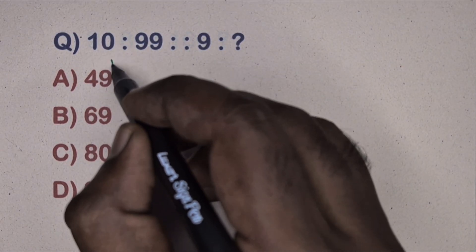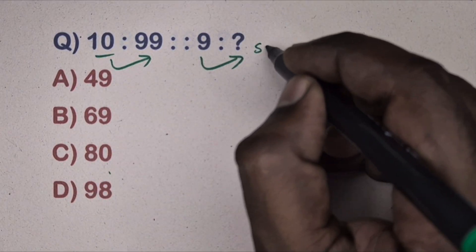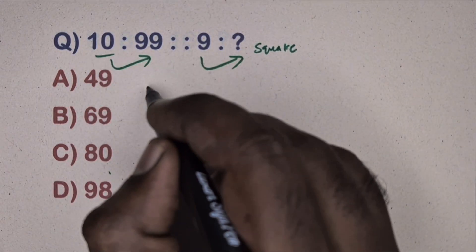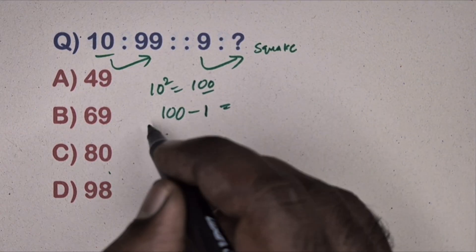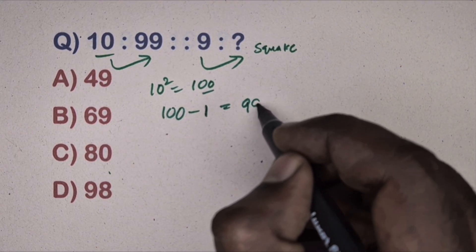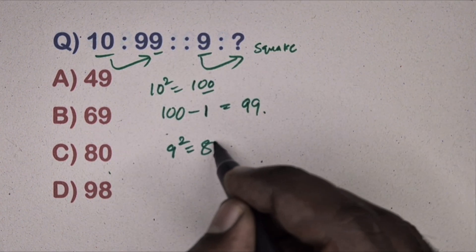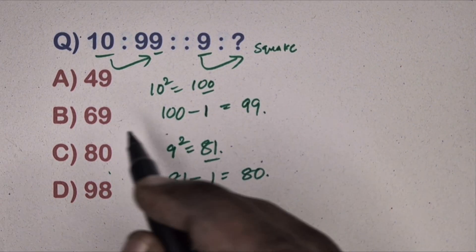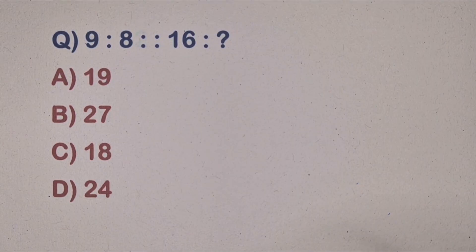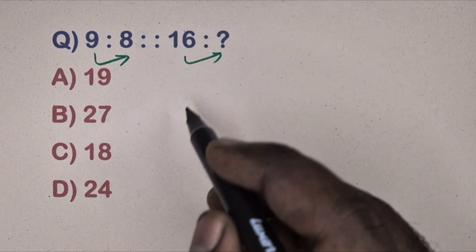Next question: 10 is related to 99, 9 is related to which number? This is the square relation. Take 10: 10² = 100, subtract 1 to get 99. Take 9: 9² = 81, subtract 1 to get 80. So option is correct.